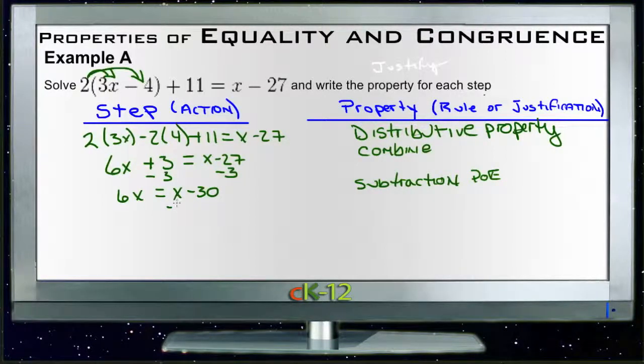And then we'll subtract x from both sides. Subtract x from over here, we get 6x minus 1x, that's 5x.